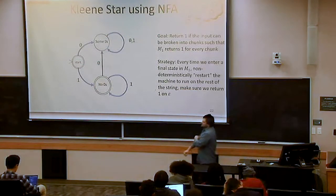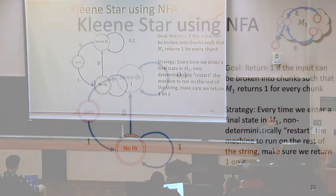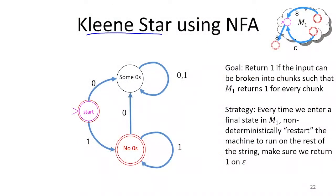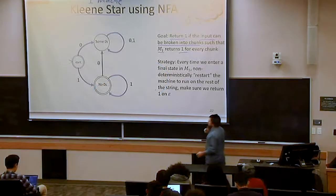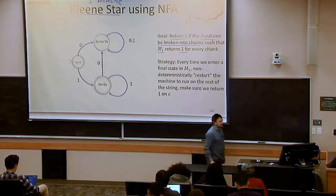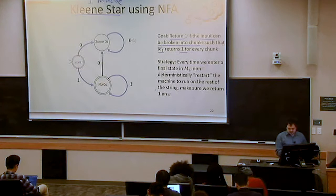We can do the Kleene star using a non-deterministic finite state automaton. Something to keep in mind: the Kleene star is only done on one machine, unlike union or concatenation which operate on two languages or two machines. Our goal is that we want this new machine we're building to return one whenever the input string can be broken into chunks such that our machine returns one for every chunk. So every chunk would take us from a start state to a final state.